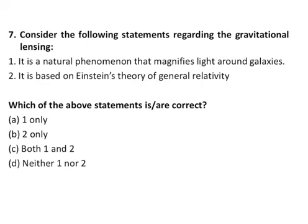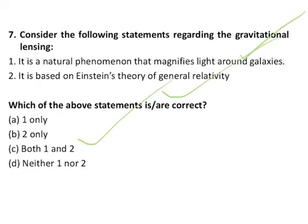Question number 7 is on gravitational lensing. The first statement says it is a natural phenomenon that magnifies light around galaxies — this is correct. The second says it is based on Einstein's theory of general relativity — this is also correct. Both statements are correct. Gravitational lensing occurs when a huge amount of matter, such as a massive galaxy or cluster of galaxies, creates a gravitational field that distorts and magnifies light from objects behind it in the same line of sight. This makes far-away, otherwise undetectable objects like individual stars visible. It is based on Einstein's theory that mass bends light.